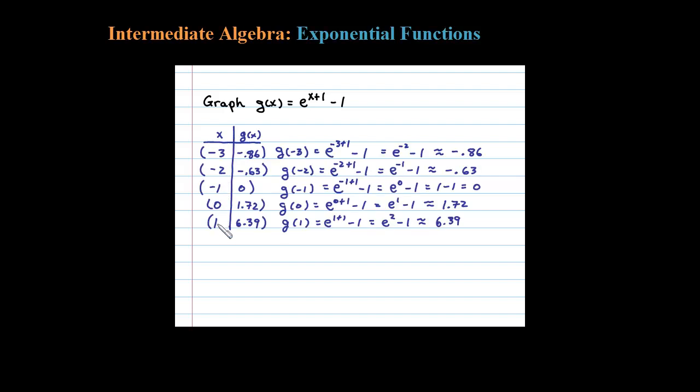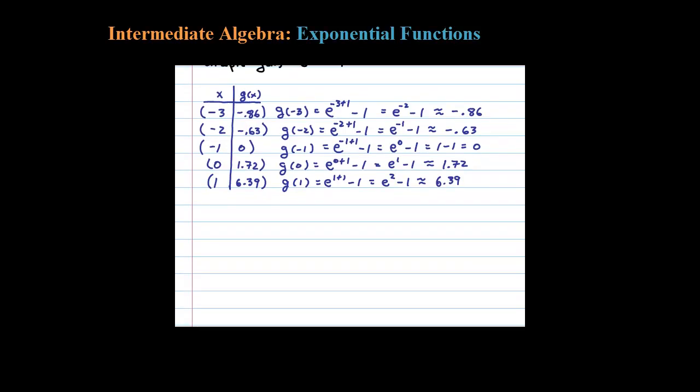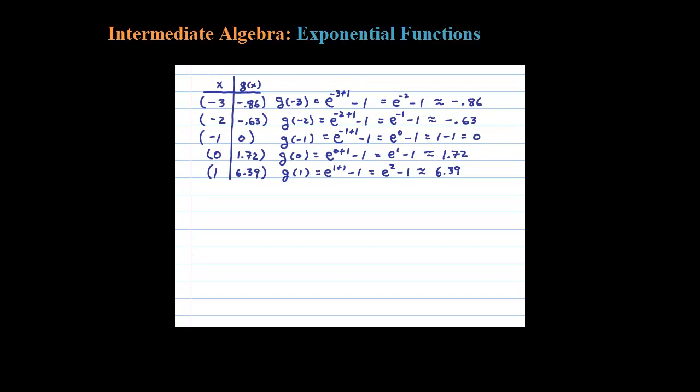Here I've substituted in the X values and found the appropriate Y values. Now I have five points to plot on a Cartesian coordinate system. Let's do that now. Remember that we're trying to graph the exponential g(x) = e^(x+1) - 1.